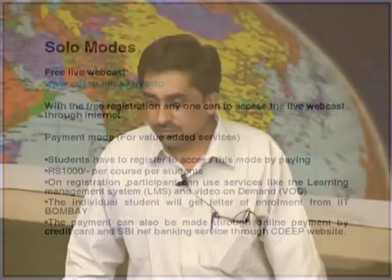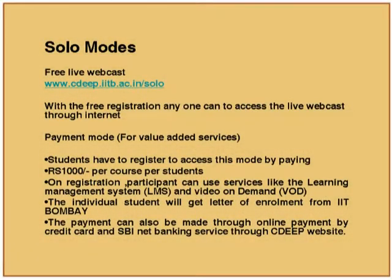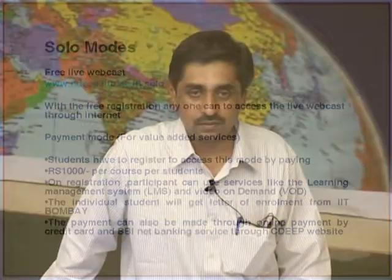CDIP makes all their courses available on webcast — last semester around 37 courses were available, and this semester 27 courses, varying based on even or odd semester. For payment, we have an online payment system — you visit the CDIP site, choose courses, and pay by Mastercard, Visa, or SBI net banking. Within seconds you get a login and password and can start learning.